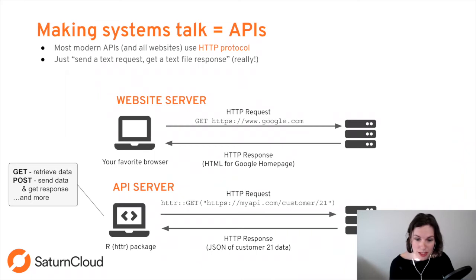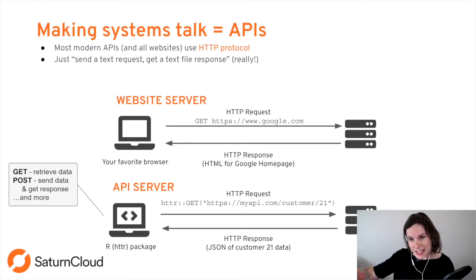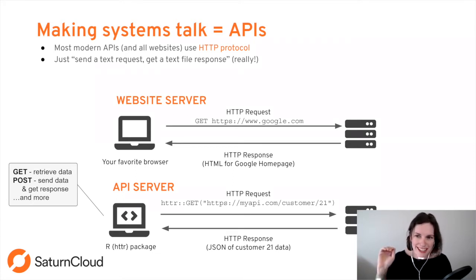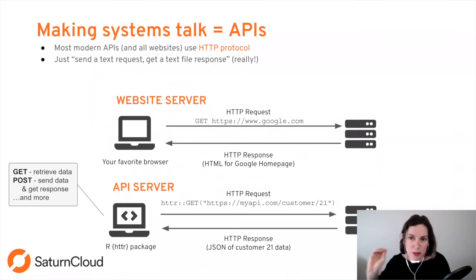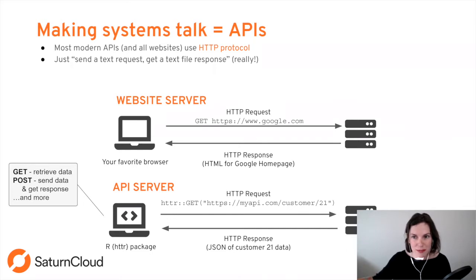With the httr package in R, or any HTTP request, there are multiple types. A GET request says: I would like information on this. A POST request actually sends data — so if you want to update a customer's name, you could do a POST request to that endpoint with the new name to use.